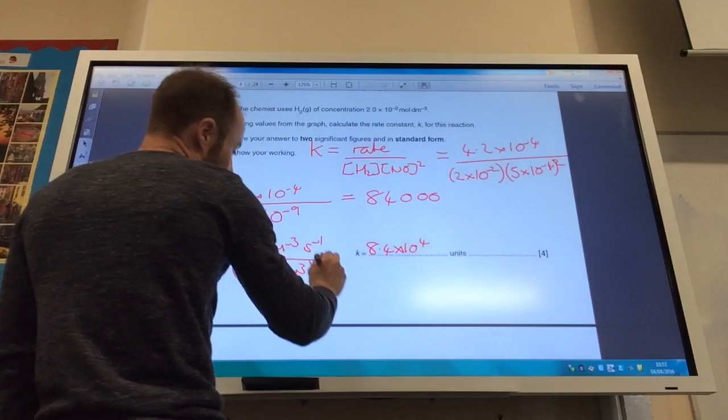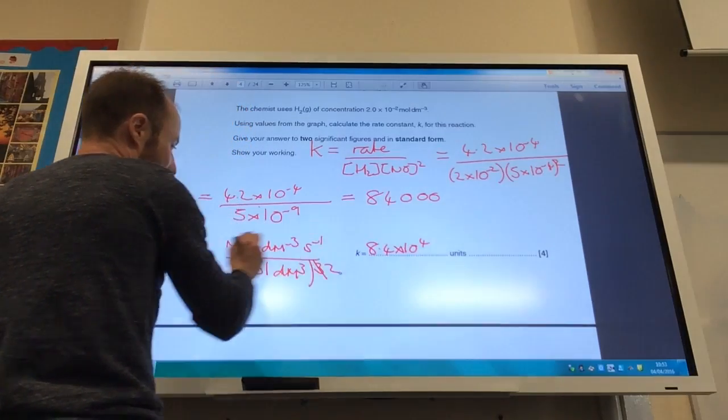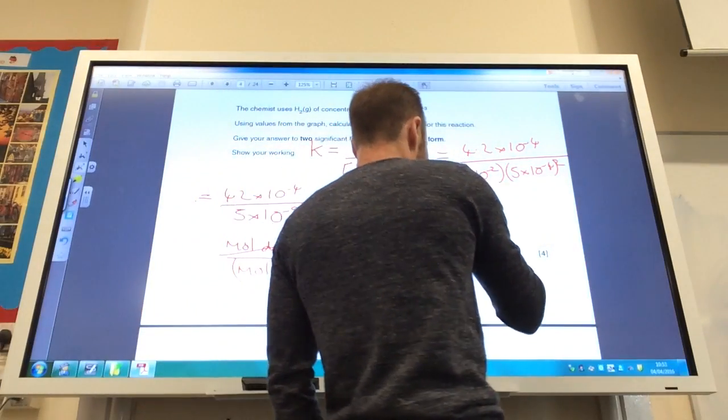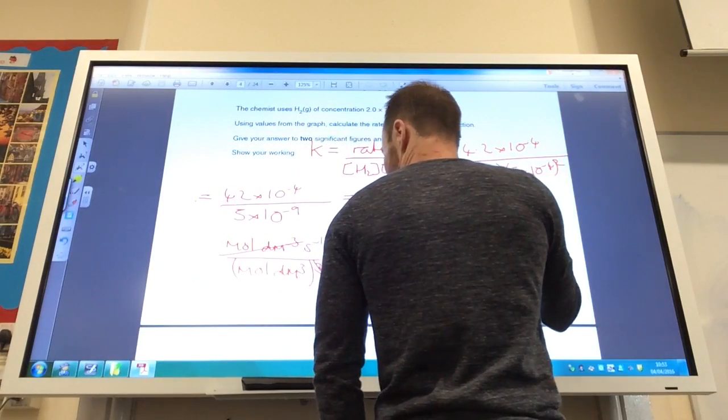So one of those will cancel down there, like so. So if you take that up, it's going to be moles to the minus 2.